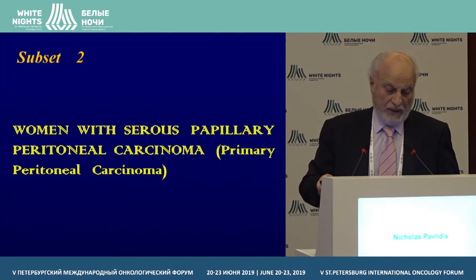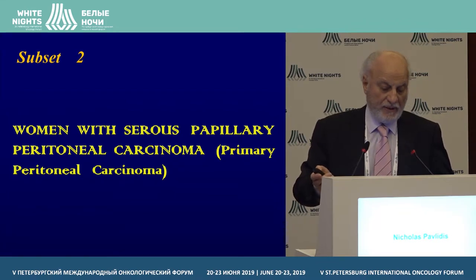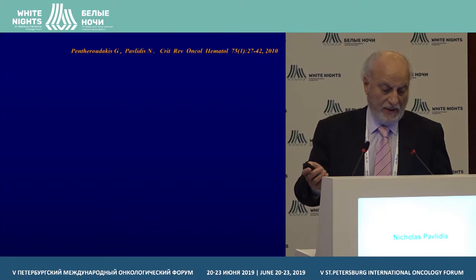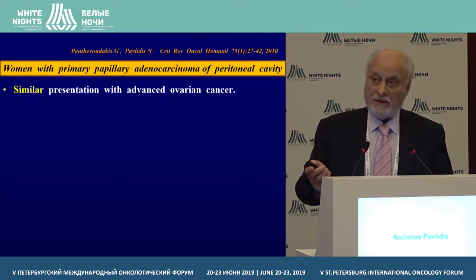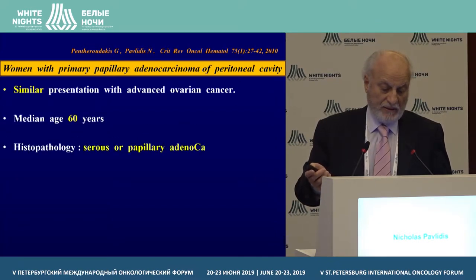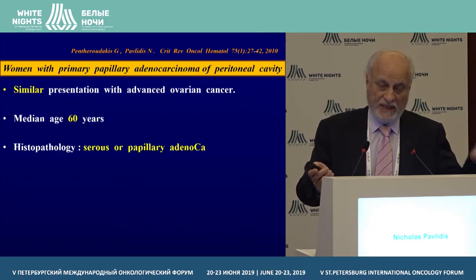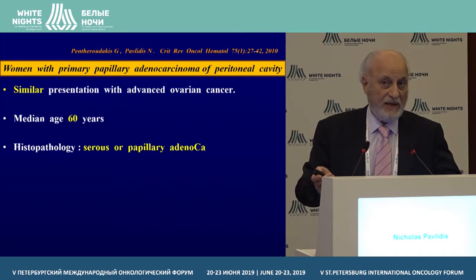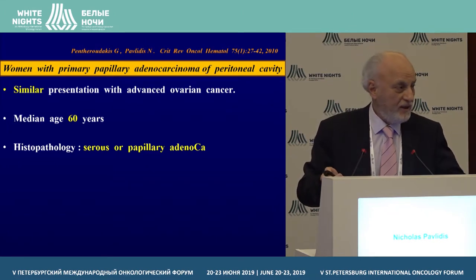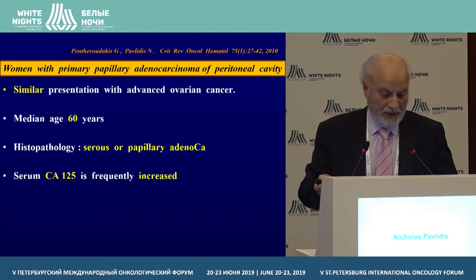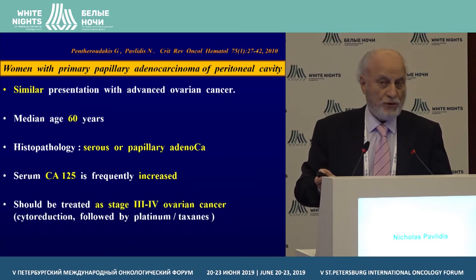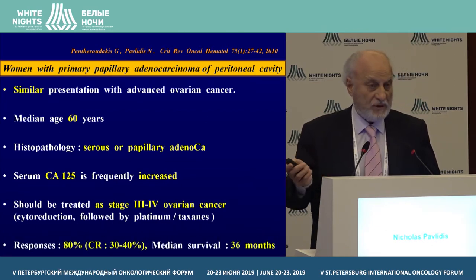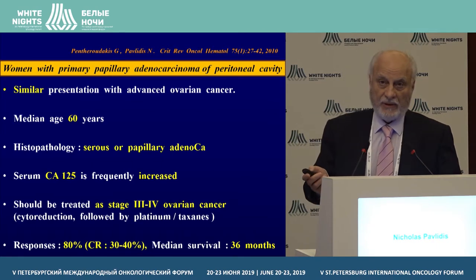Now we move to the second subset: patients with primary peritoneal adenocarcinoma, where you might have similarities with advanced ovarian cancer. Median age is 60 years. Histopathology, be careful — it should be serous or papillary adenocarcinoma, not mucinous and not clear cell. Serum marker CA-125 is increased. These patients should be treated like patients with stage 3 or 4 ovarian cancer. The response rate is 80% and median survival is 36 months.